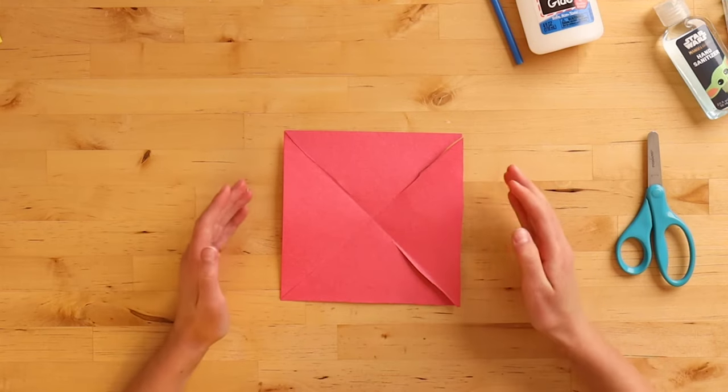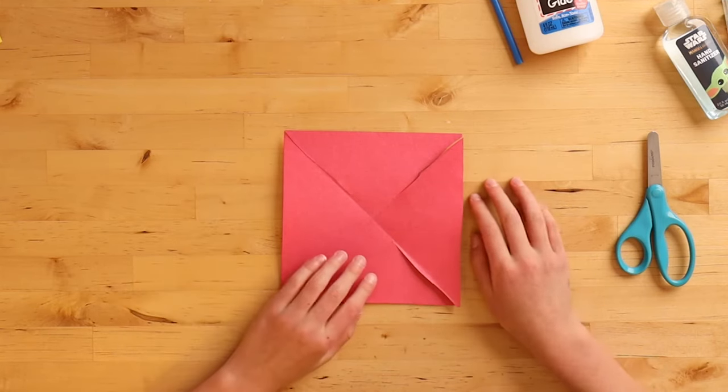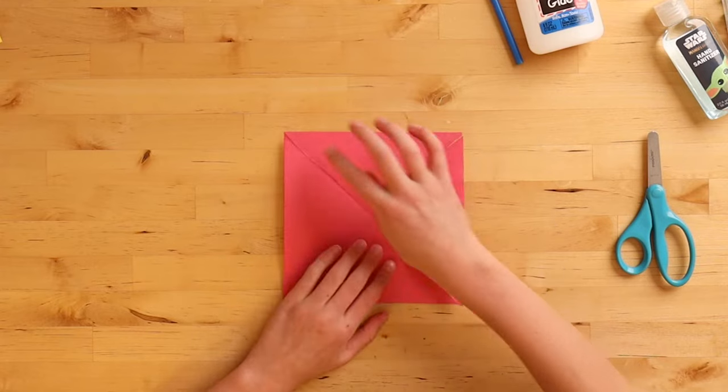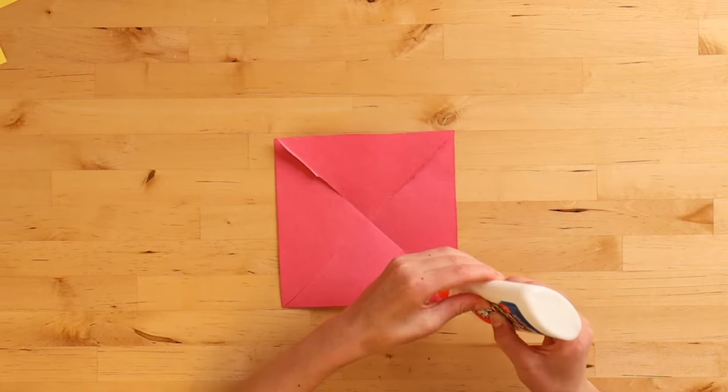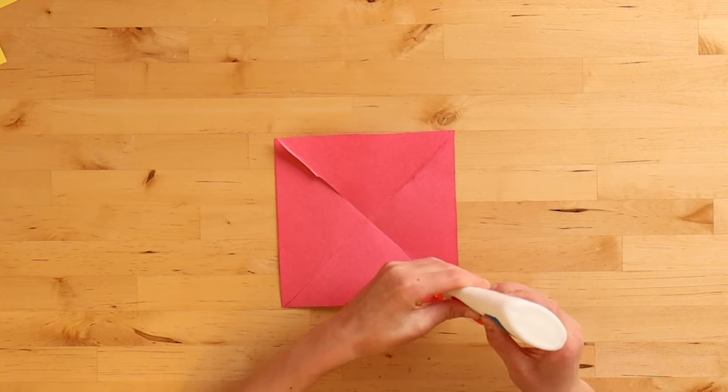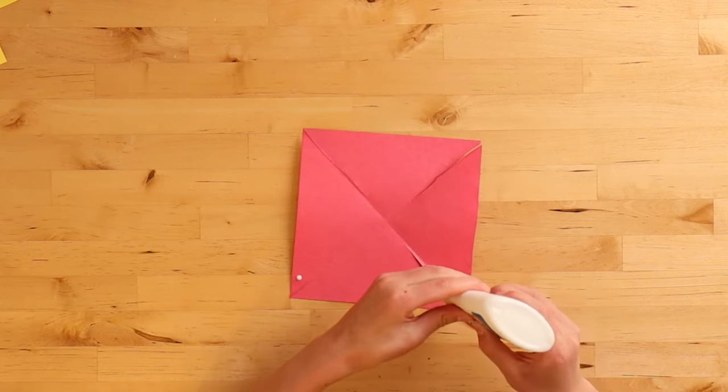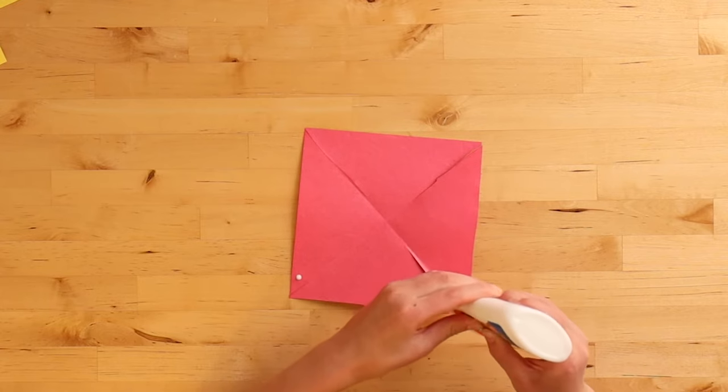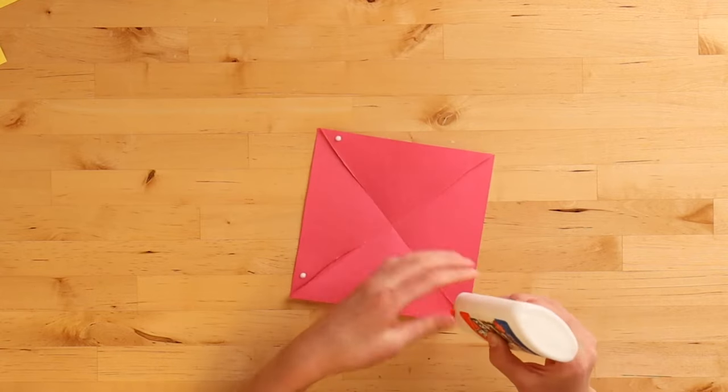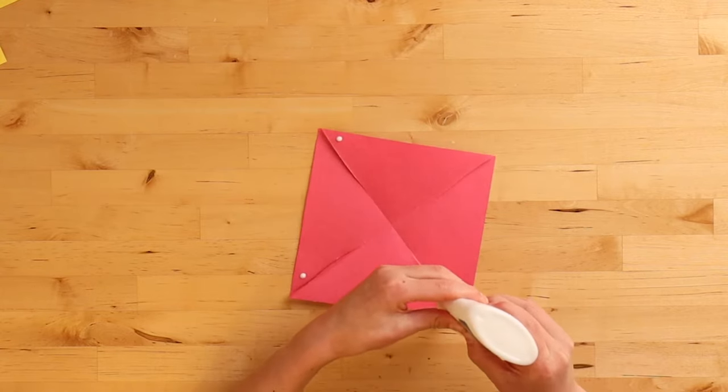So now that we have our square and our cuts, we're going to put a dab of glue on one side of each piece. We're going to spin and put it on this side, spin again, and keep putting it on only that side.